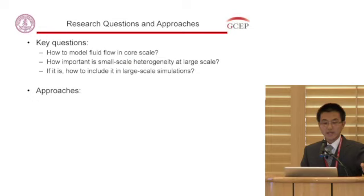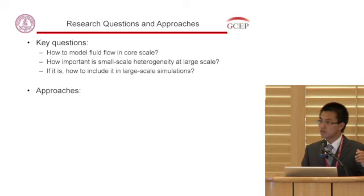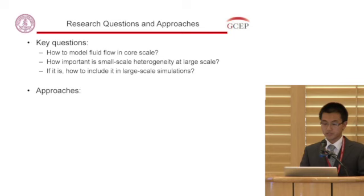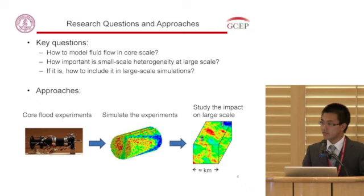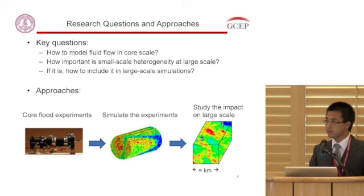We ask ourselves several questions: How do we model fluid flow at core scale? How important is small-scale heterogeneity in a large-scale simulation? And if it is important, how can we translate this important physics into large-scale simulation? Our approaches are: first, we perform core flood experiments to reveal fluid flow physics at core scale; then we perform high-resolution simulations to reproduce the experimental results and understand the core-scale physics; and then we use what we understand to study the impact on a larger scale.